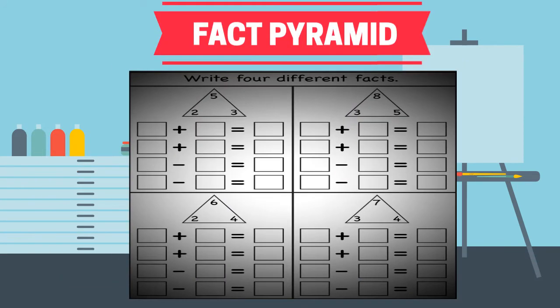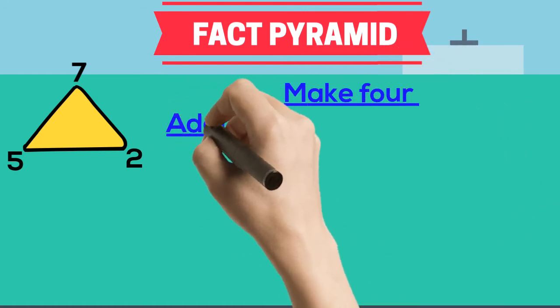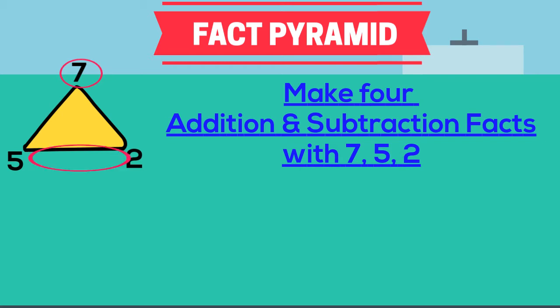In fact pyramids, three numbers are given and kids are generally asked to make four relations out of it. Here in the pyramid, 7, 5 and 2 are the three numbers from which we need to make four relationships with addition and subtraction. So, the biggest number 7 will sit on the top of the pyramid and the other two numbers on the base of the pyramid.